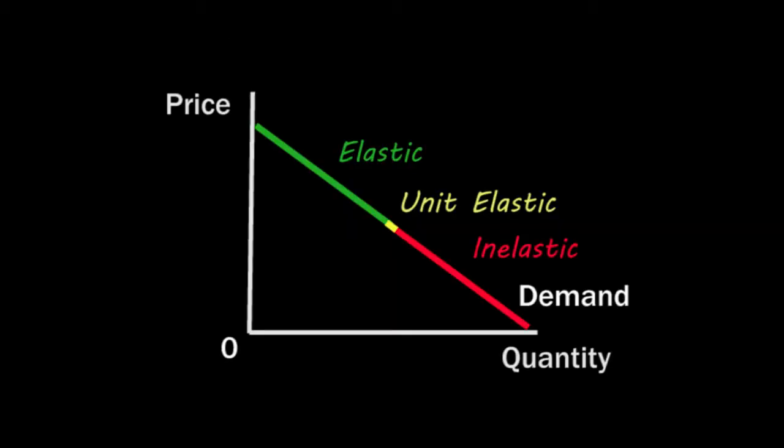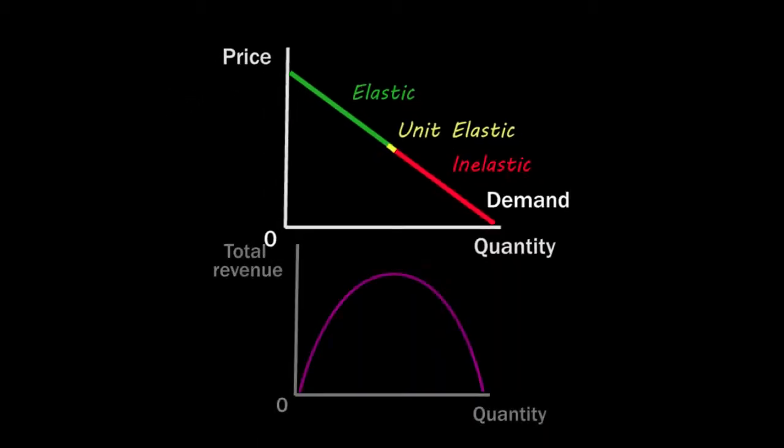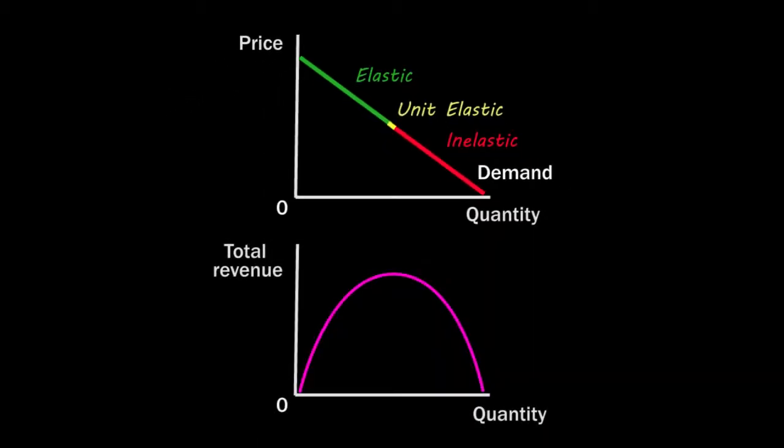A downward-sloping, straight demand curve is unit elastic in the middle, elastic on the left side, and inelastic on the right side. This graph shows how the total revenue changes as the price rises and the quantity decreases.